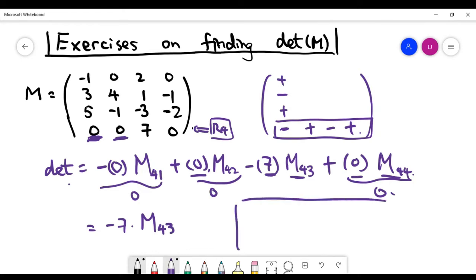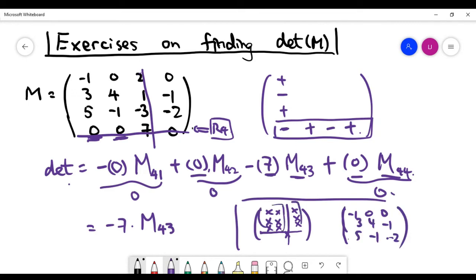Please recall how you find the minor now. To find the minor at this position, you have to delete the fourth row and the third column. So basically, you are left with basically nine numbers. If you cross it out, it means you are left with the 3x3 matrix. I'm talking about the nine numbers that will form this matrix. And the minor is basically the determinant of this matrix.